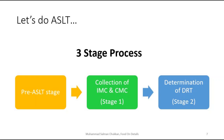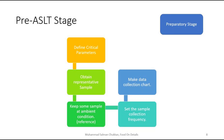Now, I believe all of you are familiar with the basic concepts of ASLT and related concepts. Let's dive into ASLT. The process of ASLT can be classified into three phases: pre-ASLT, collection of IMC and CMC, and determination of DRT. The pre-ASLT stage is the preparatory stage. Here, one should find the critical parameter, which is an important step. For example, in the shelf life assessment of any packaged drink, we select vitamin C as an indicator because it would be labeled on the product and it degrades very fast, making testing super easy.